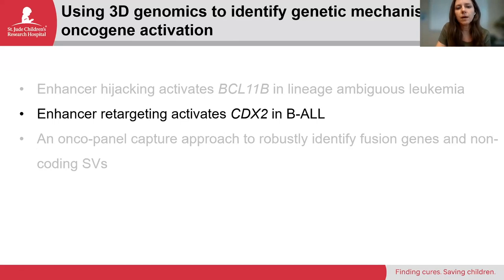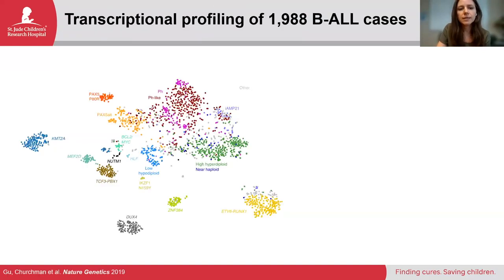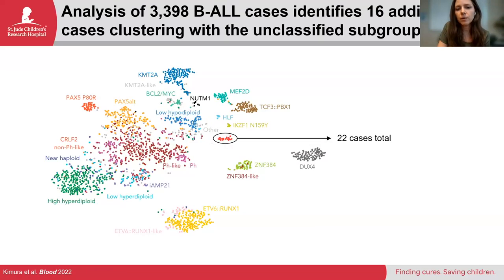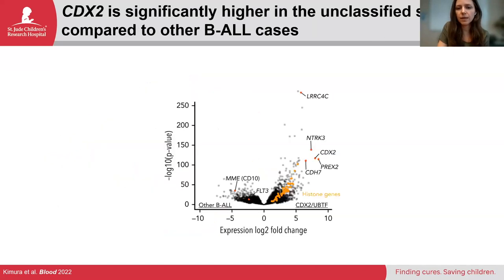The second story is about B-ALL, where we found structural variations—again non-coding—that result in the aberrant activation of the CDX2 transcription factor. This is all B-ALL, each dot again is a patient sample, and you can see very nice clusters for the most part. There's a small cluster of six cases where we did not know what the genomic driver was. We were able to acquire slightly more than a thousand additional cases, allowing us to identify in total 22 cases that clustered with this unknown subgroup. Simple differential expression analysis identified that the CDX2 gene was one of the most significantly differentially expressed genes compared to all other B-ALL cases.